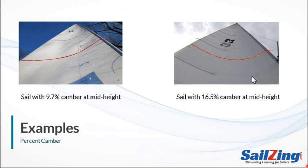Here are two examples. On the left is a relatively flat sail. We used online sail measuring software to determine that this sail has 9.7% camber at its mid-height. On the right is a relatively full sail; its camber is 16.5% at mid-height. Note that each sail's camber might be different at different heights. You can measure your own sail's camber by taking a picture and using one of several available software tools. There's a link in the description for this video.